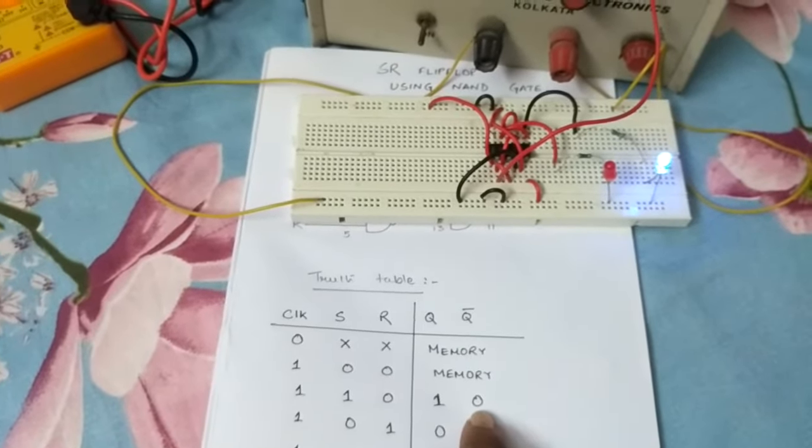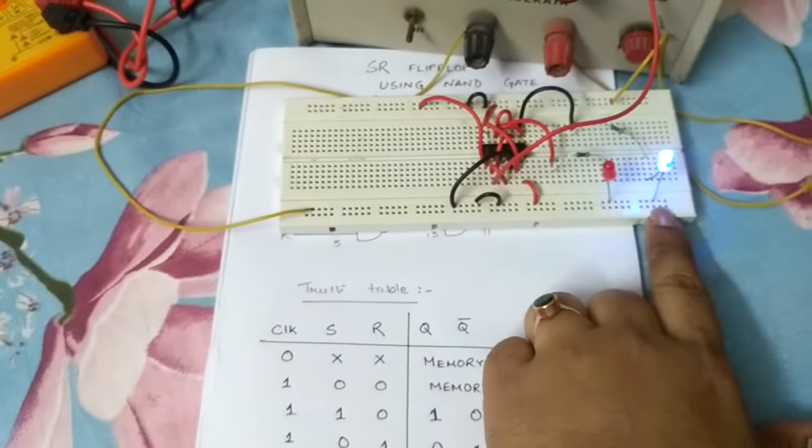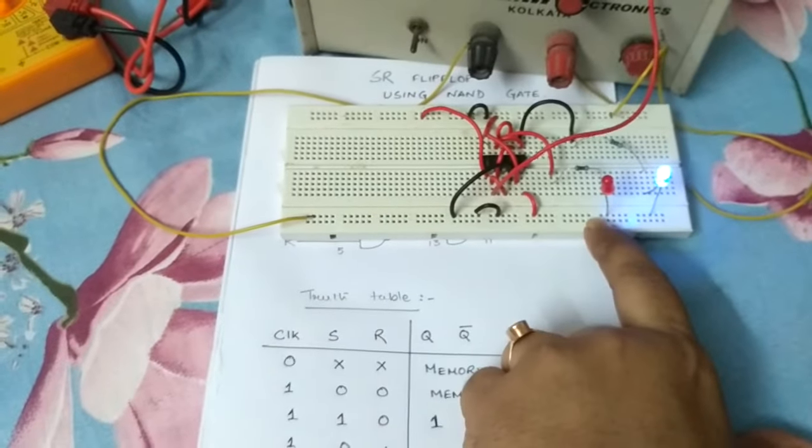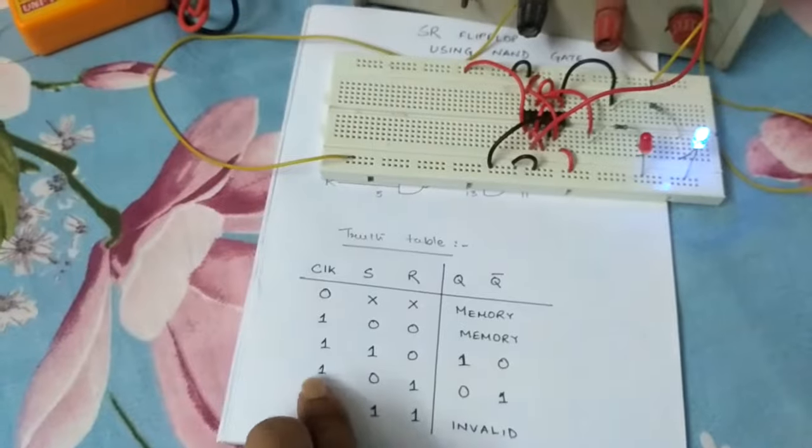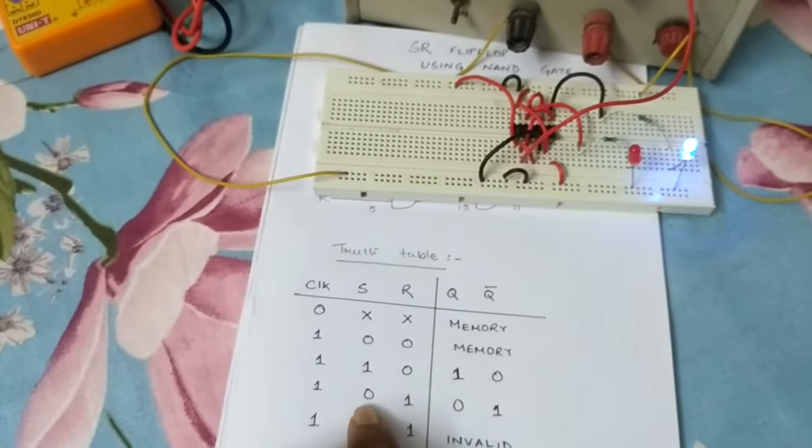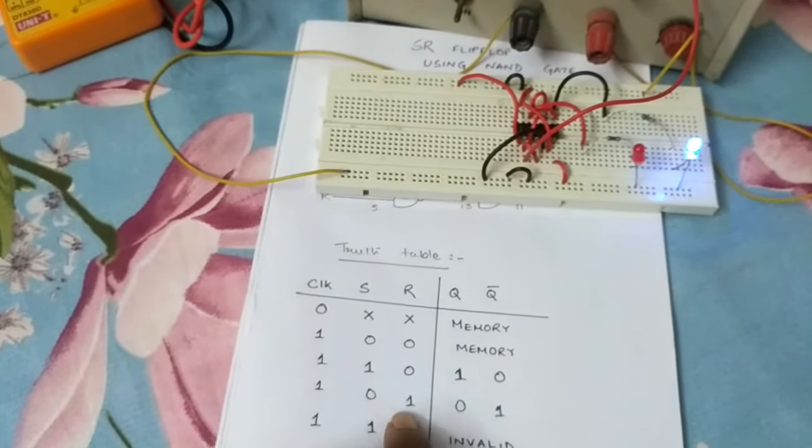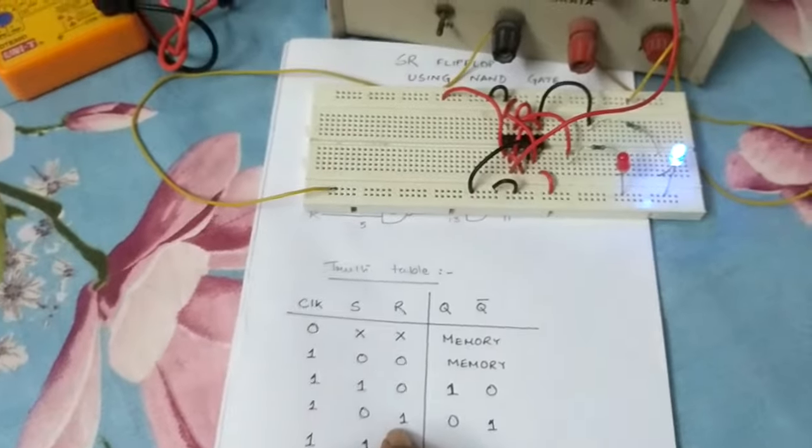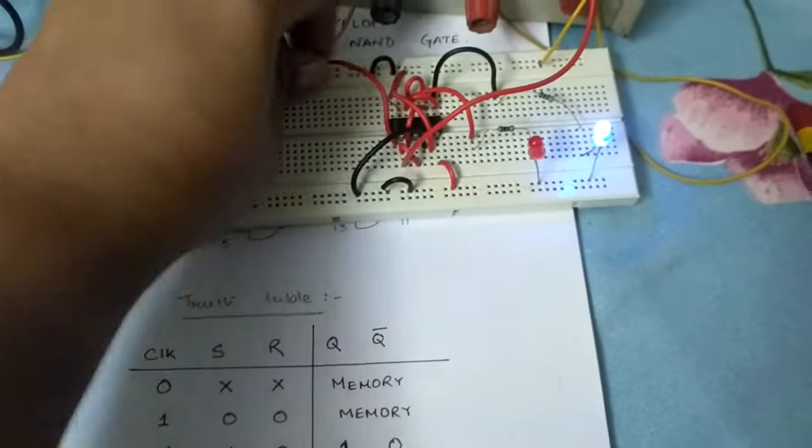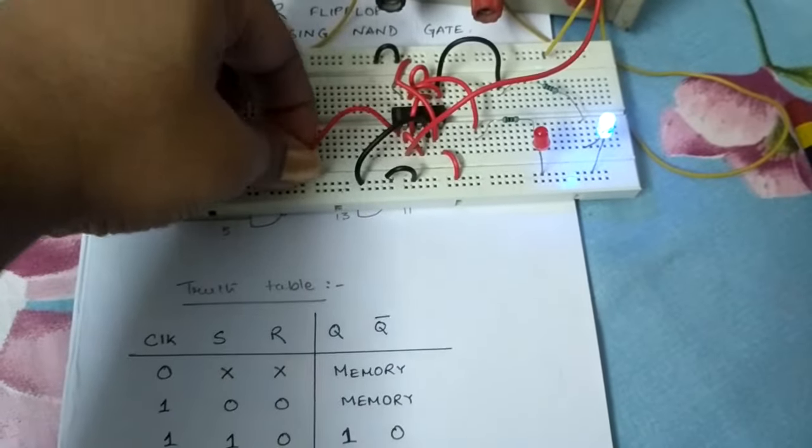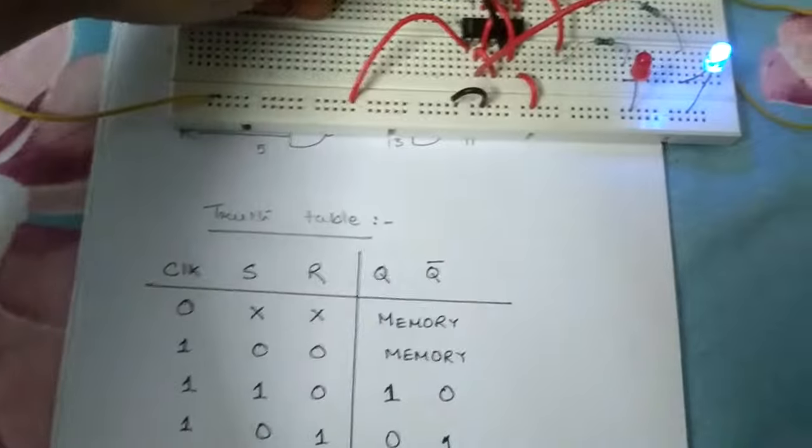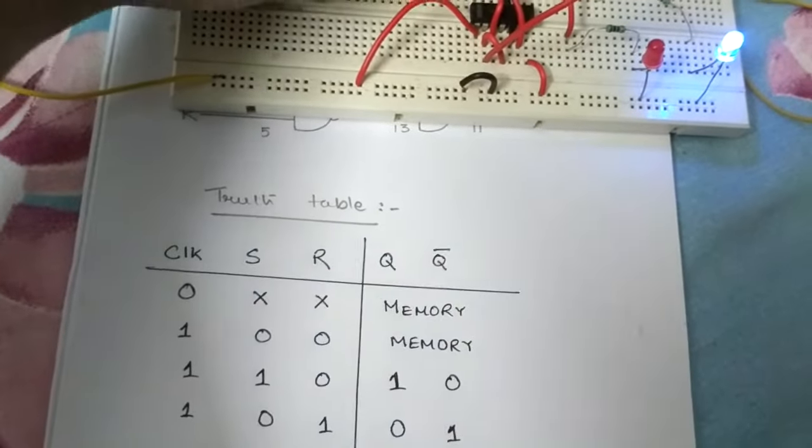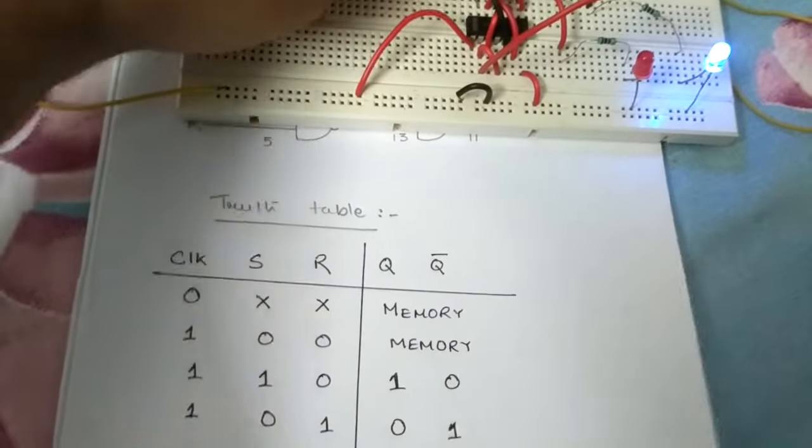Now the next one with clock pulse. Let's now make S as zero and R as one. I'll make S as zero and I'll make R as one.